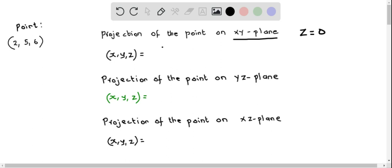So the point remains the same except the z coordinate is 0. So we can write down this as 2 comma 5 comma and then z is 0. So we have the point 2 comma 5 comma 0.